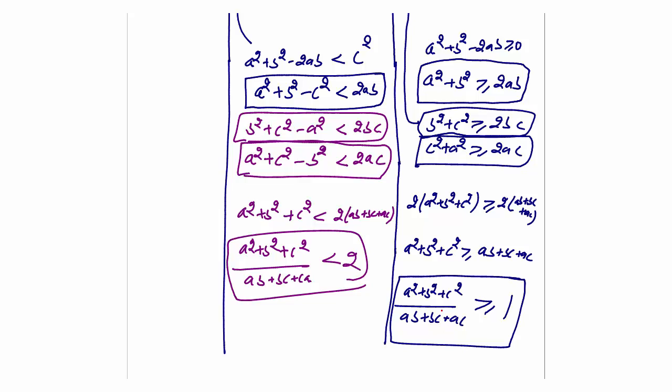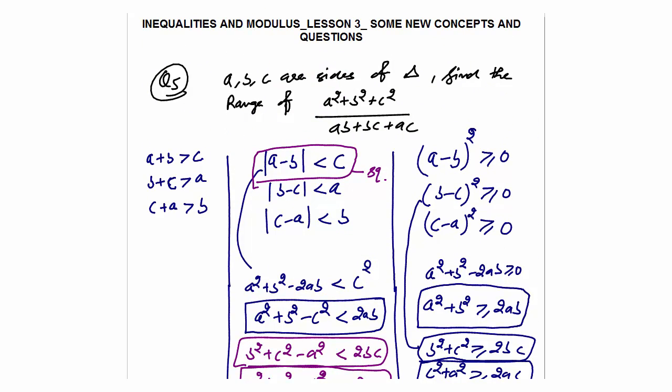Combining both results: the range of (a²+b²+c²)/(ab+bc+ca) is [1, 2) — greater than or equal to 1 and less than 2. That was all about this lesson. Thank you.